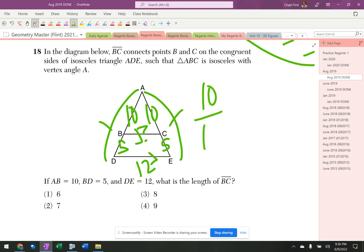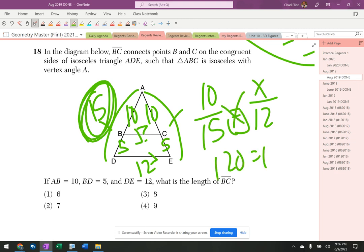Alright, so it's small triangle over large triangle, 15. They're trying to get you to use 5 equals 12 over x. So 5x equals 120, which gives us 120 equals 15x... probably 8. Let's see.